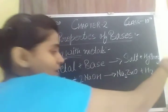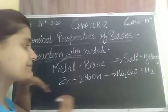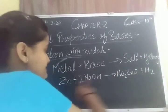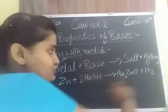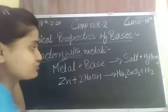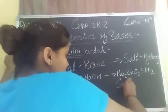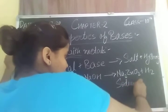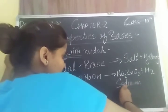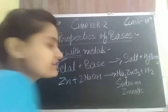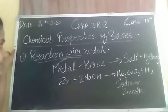To correct the formula: the product is Na₂ZnO₂ — sodium zincate. This is our product formed in this reaction.